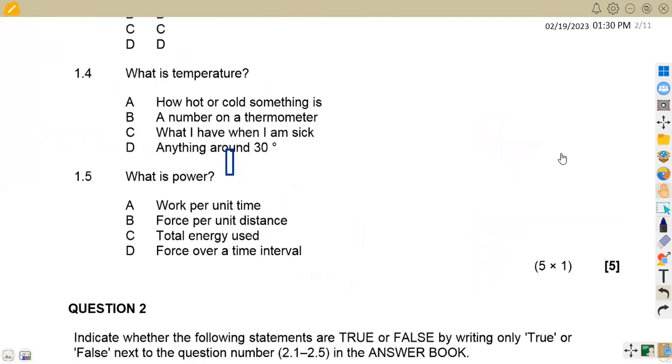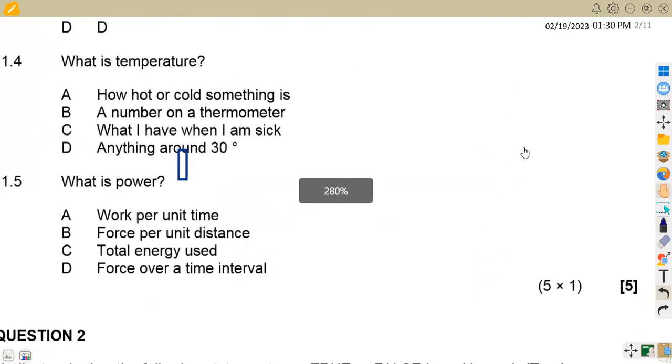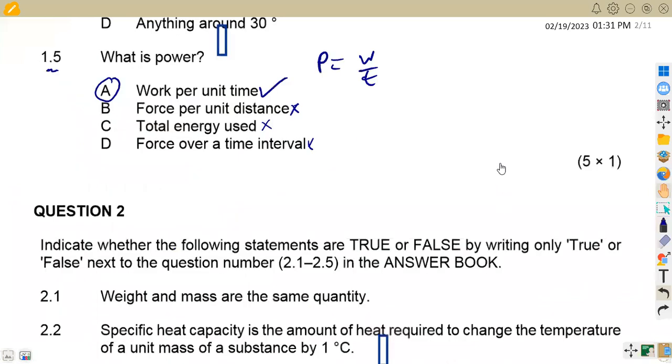What is temperature? Temperature is the degree of hotness and coldness. How hot or cold something is - that is the proper definition. On 1.5, what is power? Remember that power is work over time, so weight per unit time is the answer.